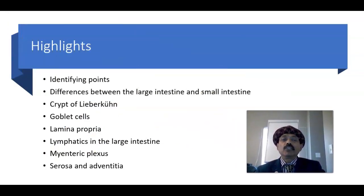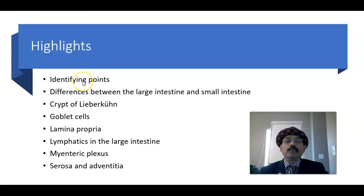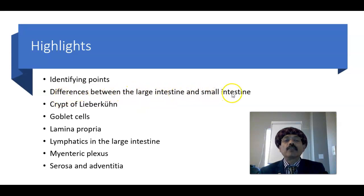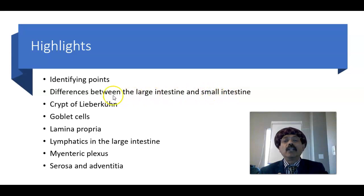Some highlights of this presentation — identifying points. We have the mucosa with epithelial cells, lamina propria, muscularis mucosa, and then submucosa, which is dense irregular connective tissue. Then we have the muscle layer: inner circular layer of muscularis externa, then outer longitudinal muscle layer. In between them we may get parasympathetic ganglia in some slides. We must differentiate the large intestine from the small intestine: small intestine has villi, Paneth cells, and plicae circulares — these are absent in the large intestine.